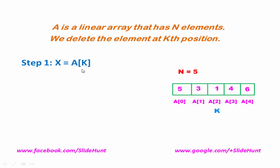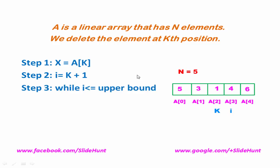Next we assign the value of k+1 to variable i, that is i = k+1. For this example i equals 3. In step 3, we write: while i <= upper bound. If this condition is true then we shift the ith position element to its previous location, that is A[i-1] = A[i]. For this example, A[3] will be shifted to A[2].